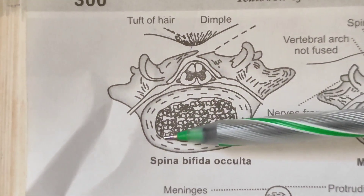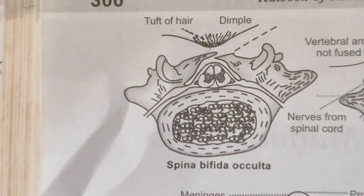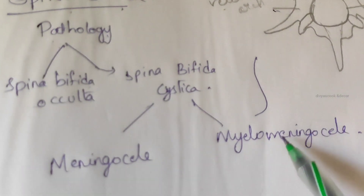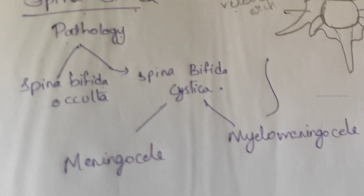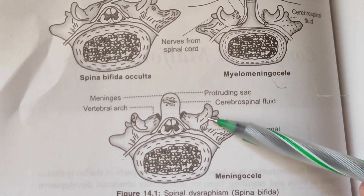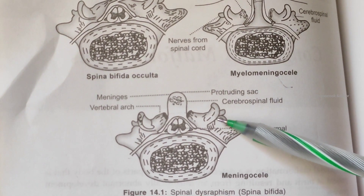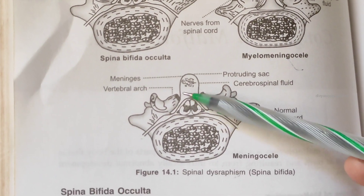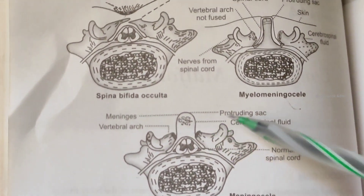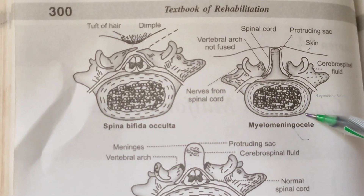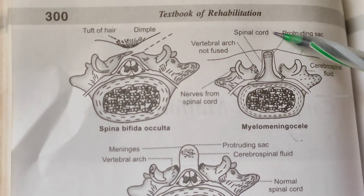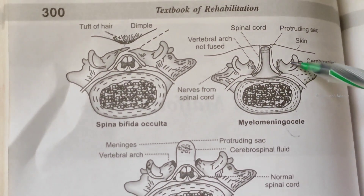Next, spina bifida cystica, which is divided into meningocele and myelomeningocele. In meningocele, the vertebral arch is not fused and a sac containing meninges and cerebrospinal fluid protrudes outside. In myelomeningocele, this is the most severe form of spina bifida and there is neurological damage.